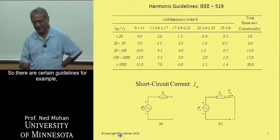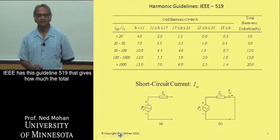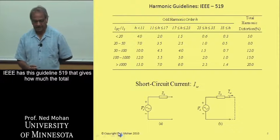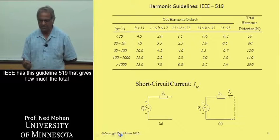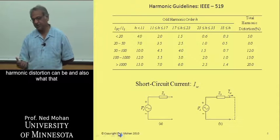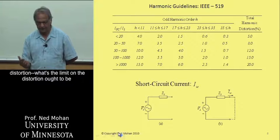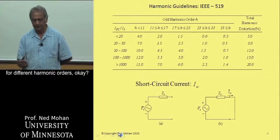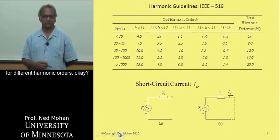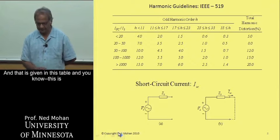So there are certain guidelines. For example, IEEE has this guideline 519 that gives how much the total harmonic distortion can be and also what the limit on the distortion ought to be for different harmonic orders. And that is given in this table.